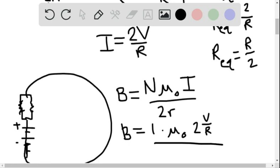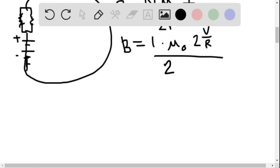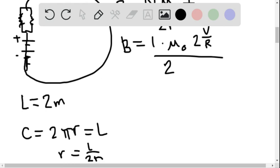N mu zero I over 2R. So let's think about what R would be. Our length of wire is 2 meters. Circumference would be 2 pi R. So that's L. So R is going to have to be L over 2 pi.